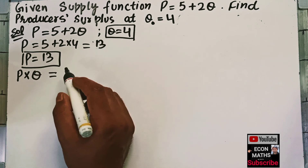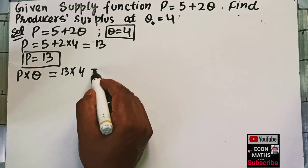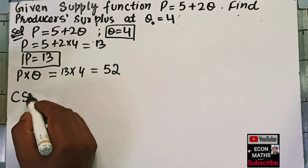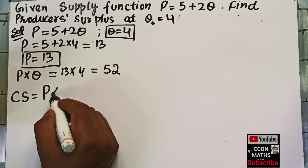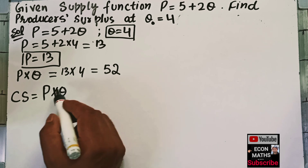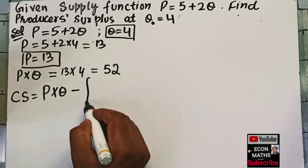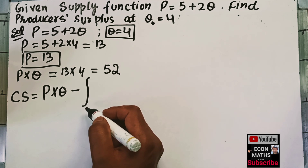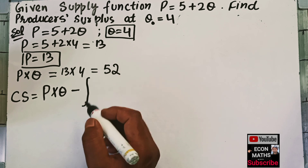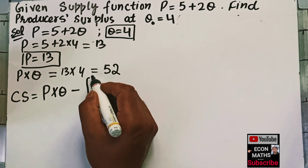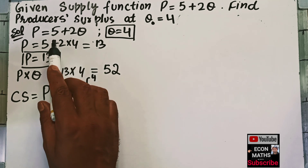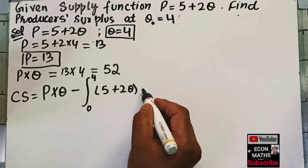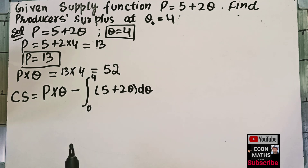P × Q = 13 × 4 = 52. Producer surplus equals the price that producers are actually paid minus the price that producers are willing to get paid, which is the definite integral from 0 to the equilibrium quantity of the supply function.